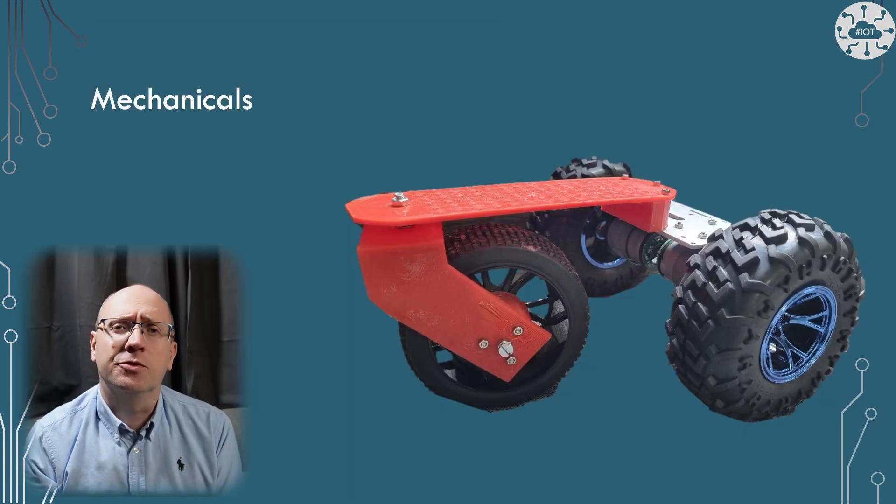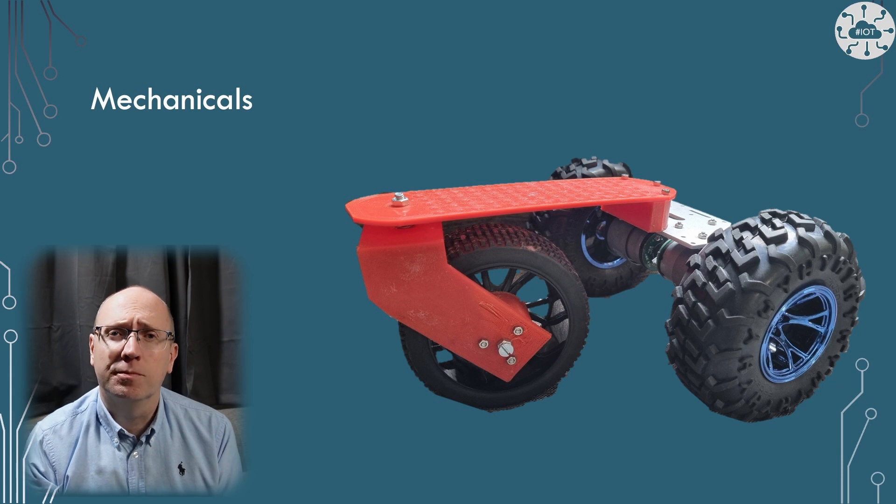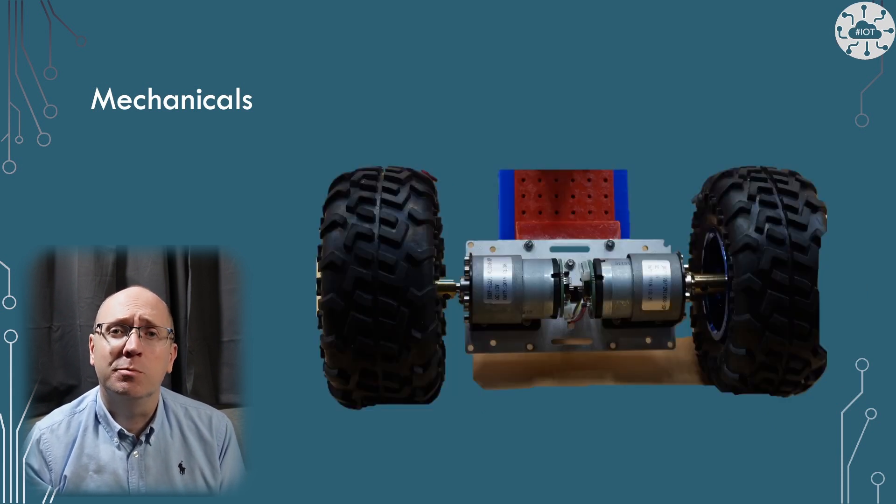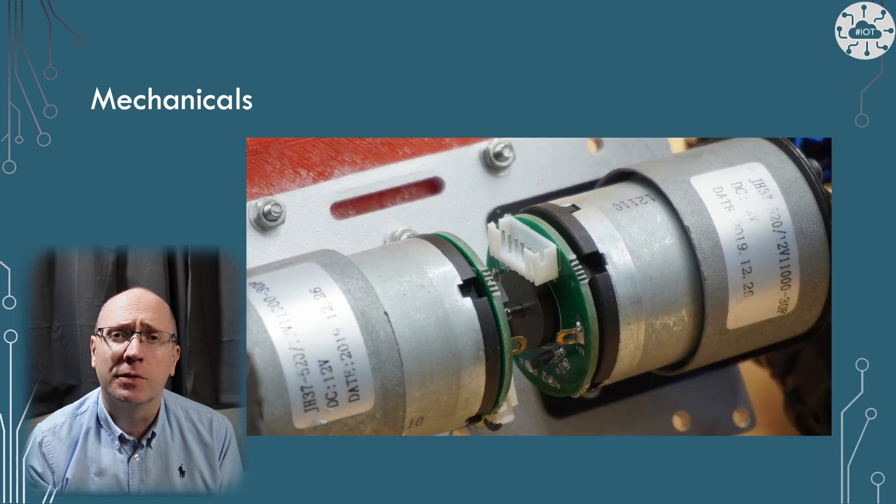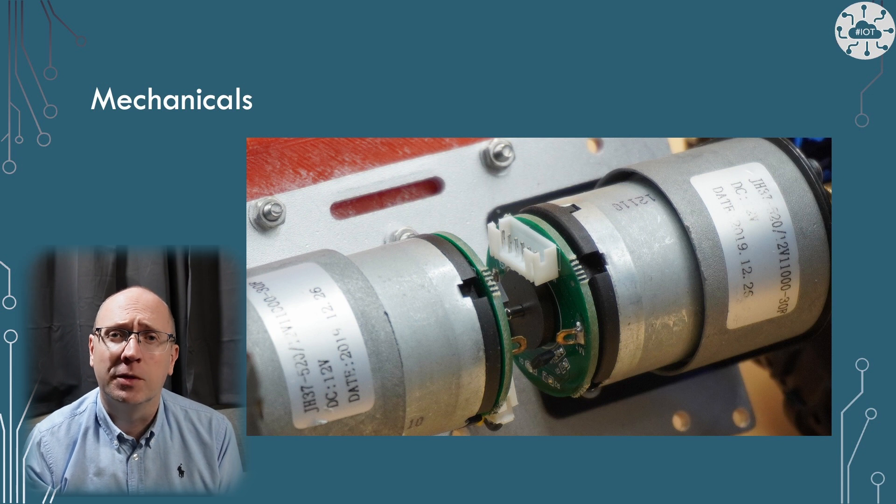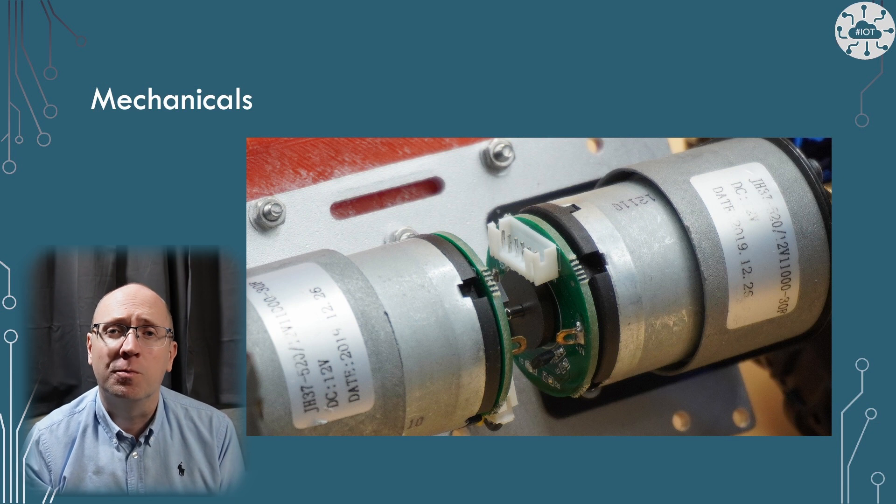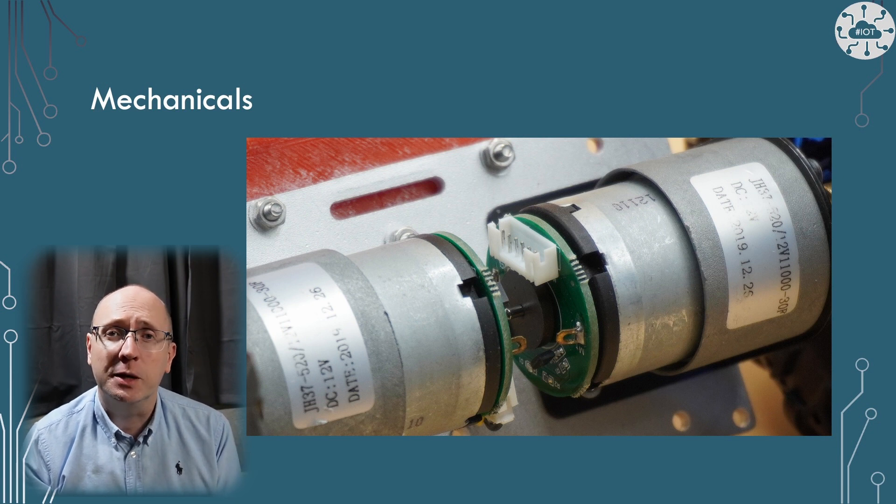For mechanical design, I want to keep things simple. It's going to have a two-wheel drive from a cheap motor kit that I bought online. And it came with two wheels and some aluminum chassis, which is really useful. They're 12-volt motors with rotary encoders on board. So I can power them with PWM to give us throttle control, and then sense back the speed using those rotary encoders.